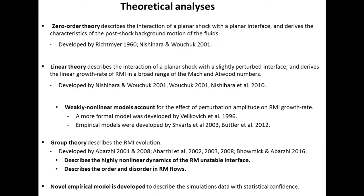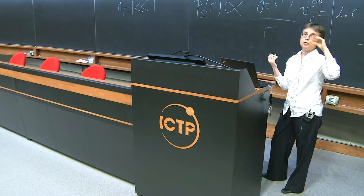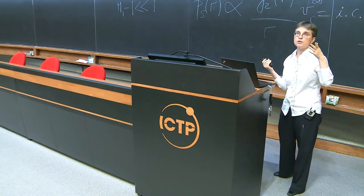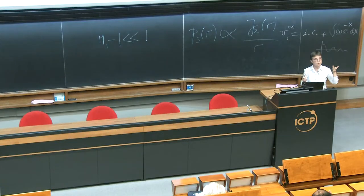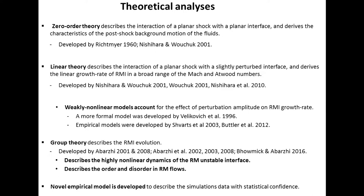We also compare with weakly nonlinear models. Measuring RMI growth rate when the initial perturbation is 1% is very challenging, so people try to make the amplitude a little larger — but then the amplitude starts to influence the growth rate. A more formal approach was developed by Velikovic, and there are also empirical models by Schwartz, Butler et al., and others. For nonlinear dynamics, we proceed to group theory analysis developed by myself and colleagues, analyzing highly nonlinear RMI dynamics and describing order and disorder in RMI flows.